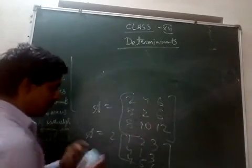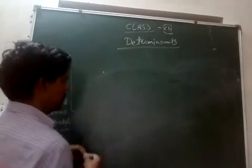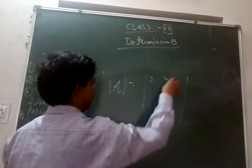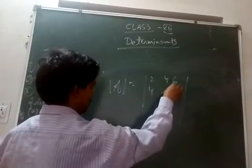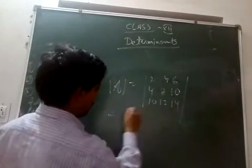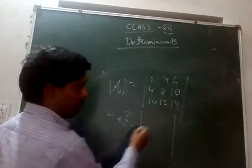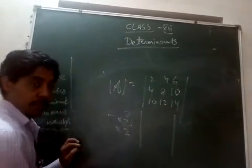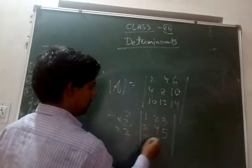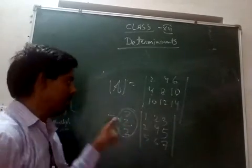In a determinant, if you take 2 common from each of the three rows separately — for example from determinant 2 4 6 / 4 8 10 / 10 12 14 — you factor out 2 three times, getting 2³ = 8 times the determinant of 1 2 3 / 2 4 5 / 5 6 7. This is the basic difference between a matrix and a determinant.